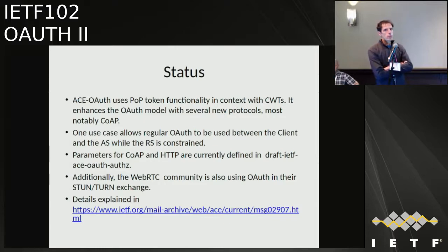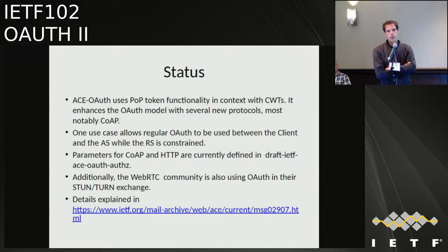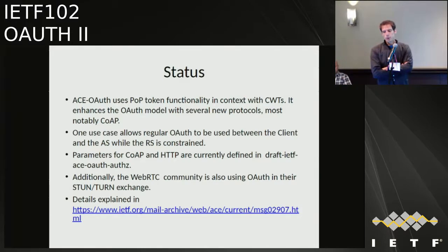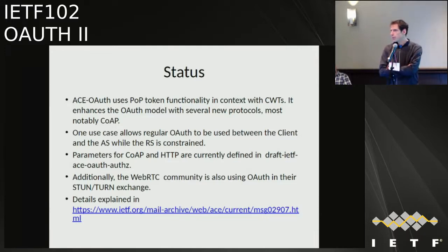In the ACE-OAS specification there's a framework document which builds on OAuth, and it uses the POP token functionality only — it doesn't use bearer tokens — and it points to the CWT instead of the JWT for efficiency reasons. There are also other protocols used in ACE other than HTTP. We've also worked on other protocols in OAuth, such as SASL and GSS-API for email, though that was done under the supervision of OAuth rather than directly in it.